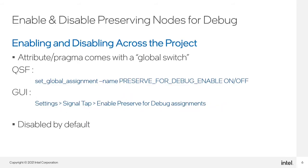Once a user has marked nodes to be preserved for debug, they can enable or disable the feature through a global switch in the Cordis project settings. When the feature is disabled, the preserve for debug compiler attribute will not be applied to the marked nodes. This should prevent users from needing to manually remove and re-add nodes as they go through their debug flow. To do this, users can add the following global assignment to the project QSF file, or they can navigate to the signal tap section in the settings GUI to enable or disable the preserve for debug feature.